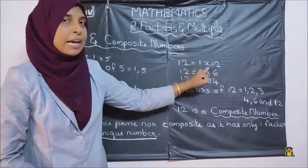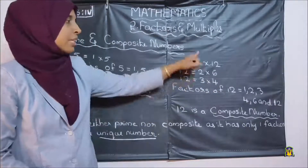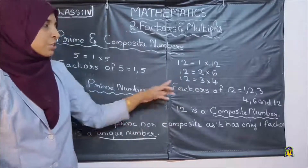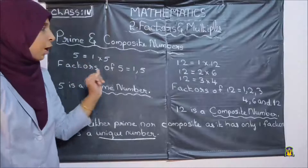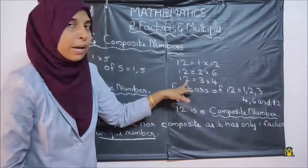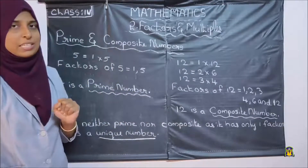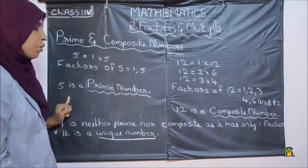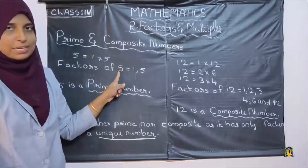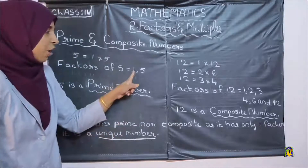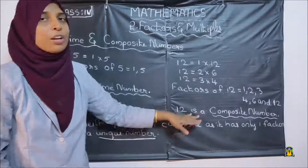Now look at 12. We can write 12 as 1 into 12, also as 2 into 6, and also as 3 into 4. So factors of 12 are 1, 2, 3, 4, 6, 12 — that is 6 factors. Numbers which have only 2 factors, that is 1 and the number itself, are called prime numbers — so 5 is a prime number. Numbers which have more than 2 factors are called composite numbers — so 12 is a composite number.